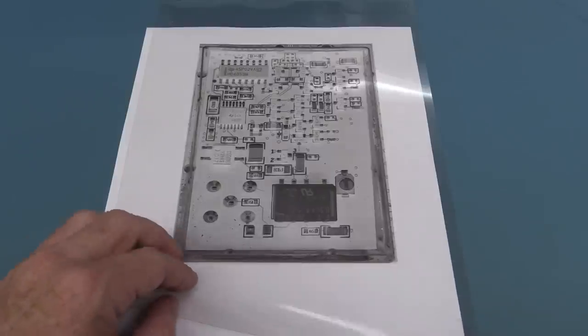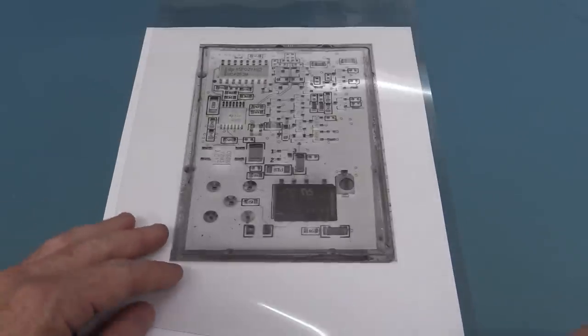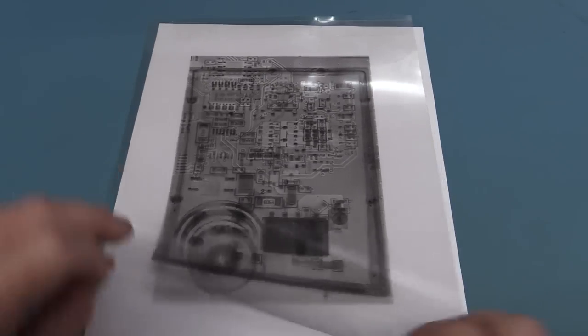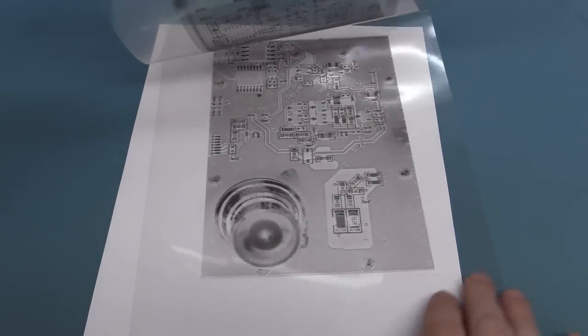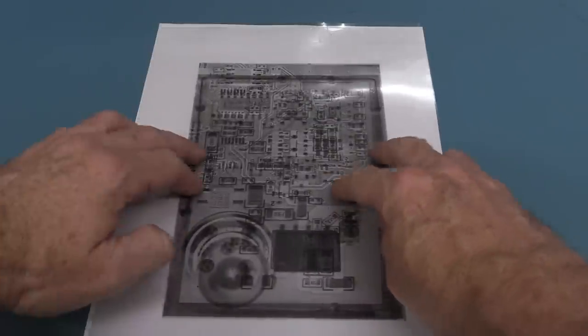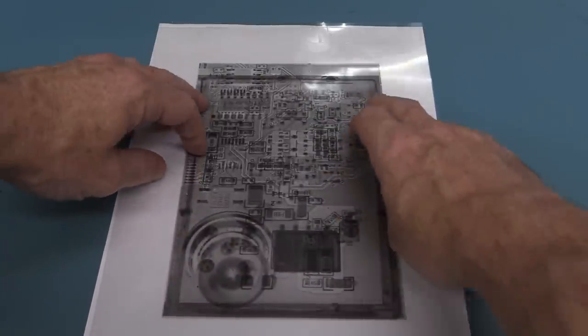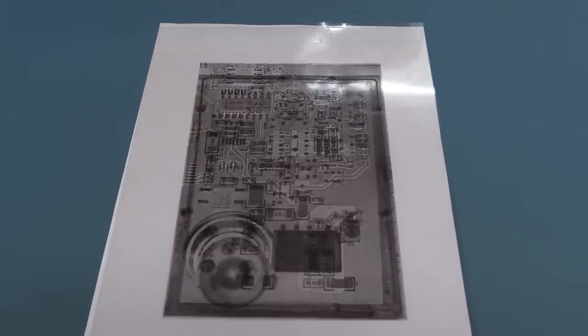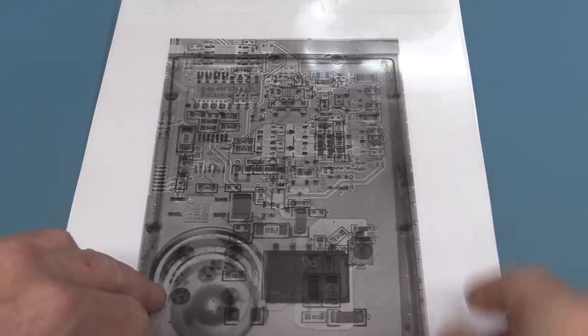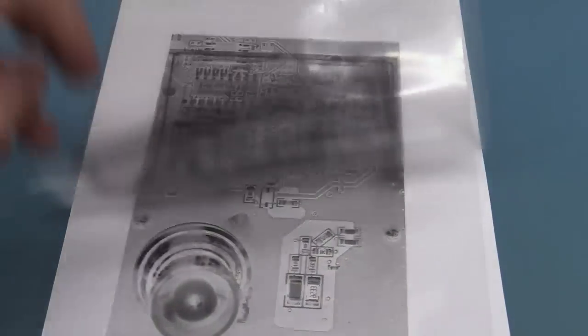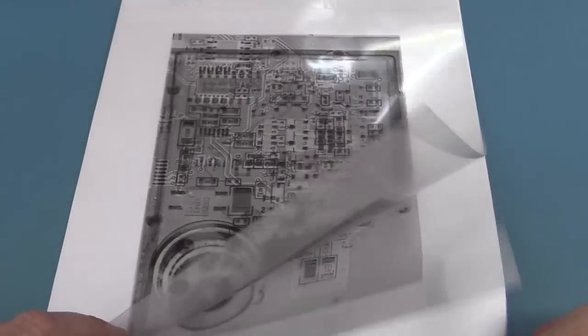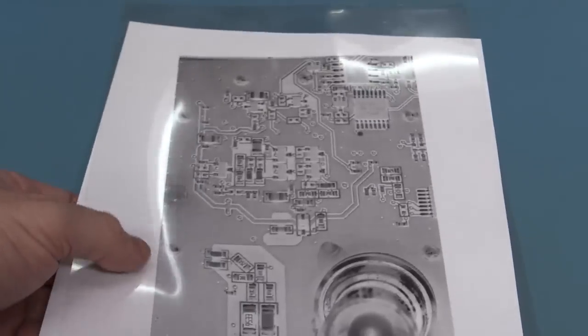Then what you do is print each layer out onto overhead transparency like this so that you can see through it. You line them up and if you've scaled correctly, ta-da! They will overlay like that. You basically use the vias as alignment markers on there. Too easy. You can now see and follow signals through top and bottom of the board.